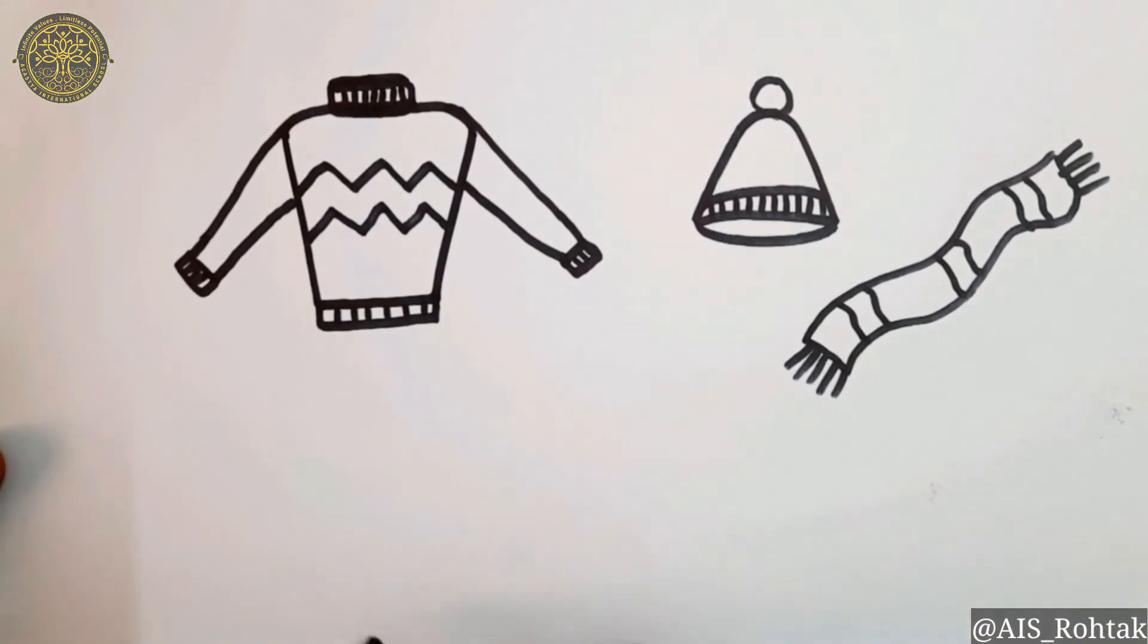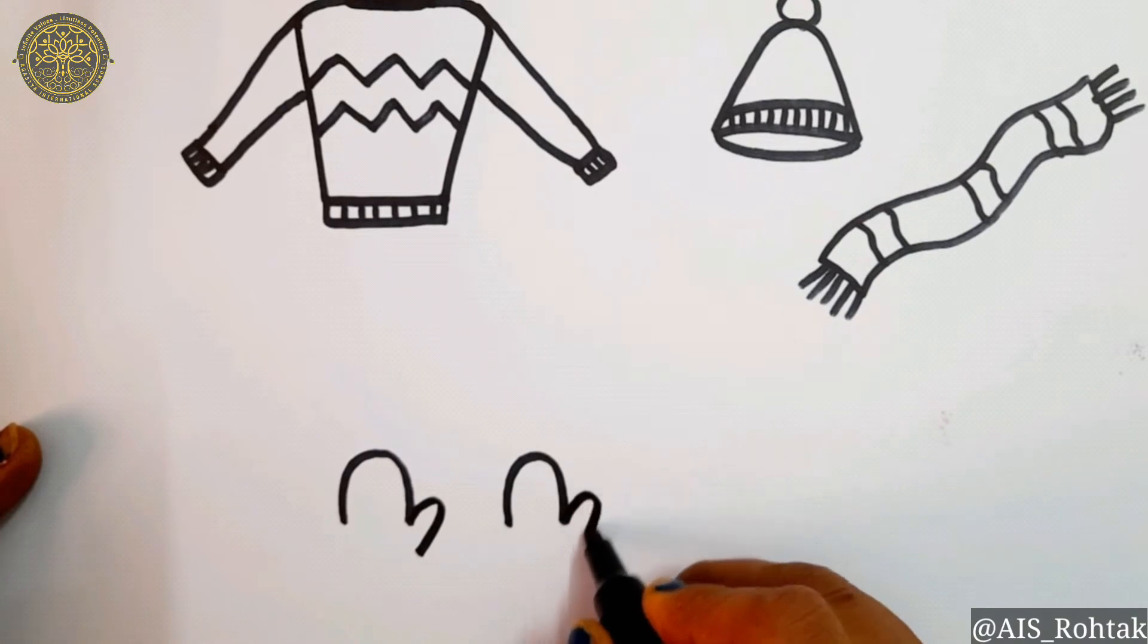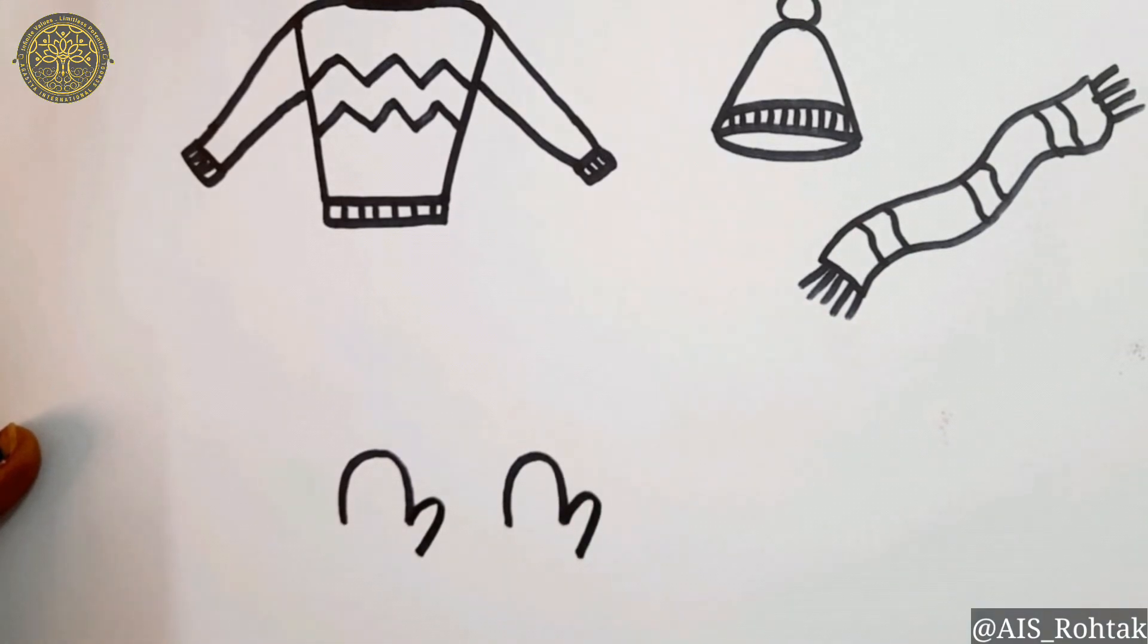To draw gloves, just draw semi-circles like this. Now draw the thumb like this on one side. Extend that line which is opposite to the thumb. Now join this line with the thumb like this.